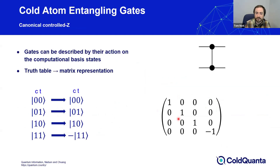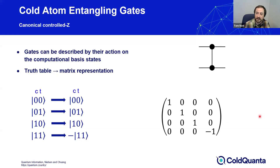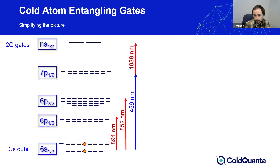We'll see how to use this effect to implement a controlled-Z gate. What is a controlled-Z gate? Gates are typically described by their action on the computational basis states. For the CZ gate, the truth table shows that three of the two-qubit input states are unchanged and the final state — the 1,1 state — has its phase flipped. Equivalently, in a matrix representation where the action of the matrix operates on a column vector of the computational basis states in standard ordering, we can see this phase flip clearly.